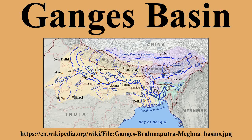The Ganges Basin is a part of the Ganges-Brahmaputra-Meghna Basin, draining 1,086,000 square kilometers in Tibet, Nepal, India and Bangladesh. To the north, the Himalaya and lower parallel ranges beyond form the Ganges-Brahmaputra Divide.